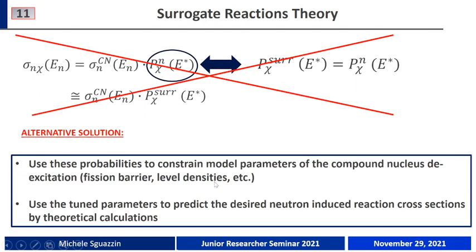We should find a different way to use the surrogate reaction method. This alternative solution is a little bit more tricky but very interesting: we can still measure the decay probabilities provided by the surrogate reaction and use them to define and constrain a set of model parameters that describe the de-excitation of the compound nucleus. Once these parameters have been tuned, we can try to predict the neutron-induced reactions by performing theoretical calculations.